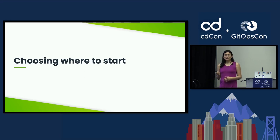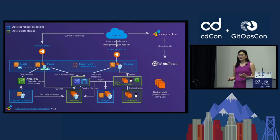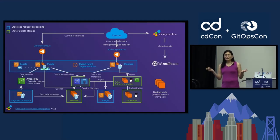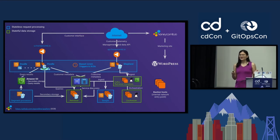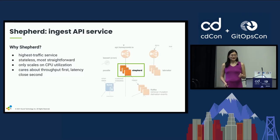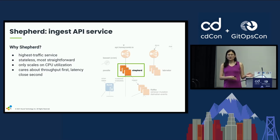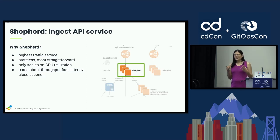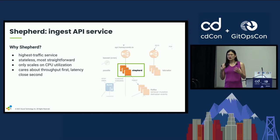We started in the lowest possible risk environment — internal dogfooding environments rather than full production. We also looked at a mixture of services and said we're going to pick the services that are stateless rather than stateful, where we get a chance to do gradual drains and traffic shifting rather than risk corrupting data. Shepherd is the ingest service that transmutes incoming OpenTelemetry formatted data from our customers and persists it into Kafka. It's a real acid test of whether a compute architecture is up to snuff because it does heavy compression, decompression, and parsing workloads that really exercise a CPU.